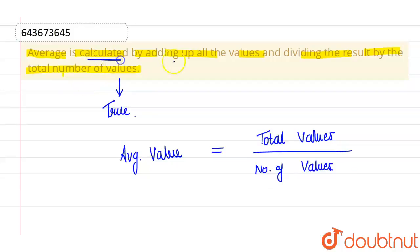And this is what the statement says: that average is calculated by adding up all the values, which we are doing in total values, and dividing the result by total number of values, which is number of values. Okay, so this is the formula.